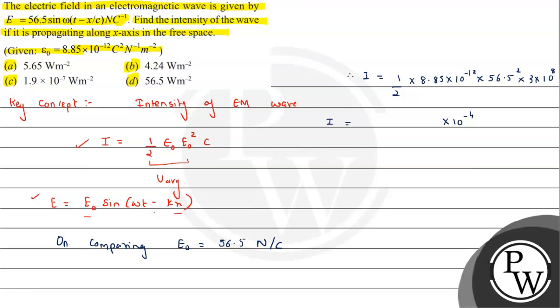So on simplification, this value comes out to be 4.2377 × 10⁻⁴ watt per meter square.